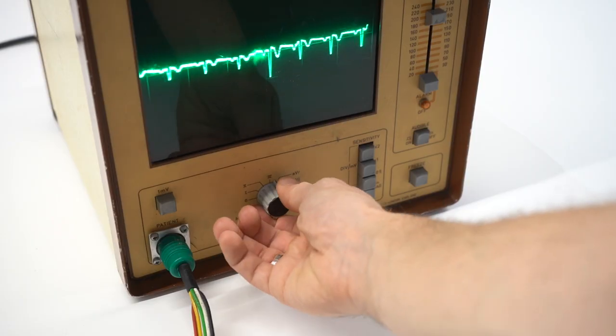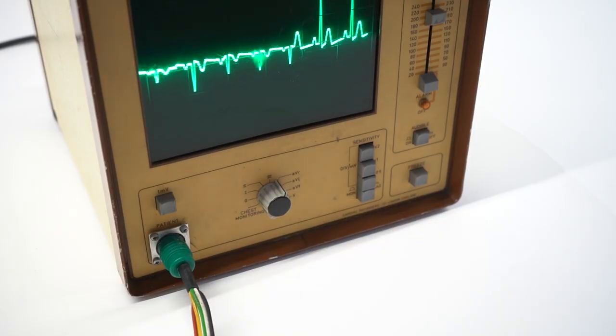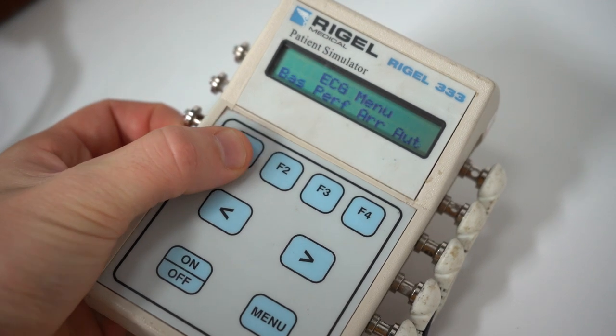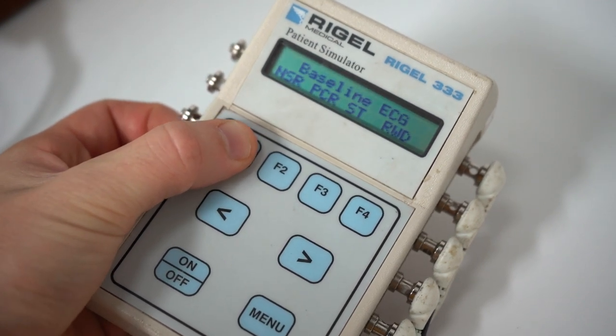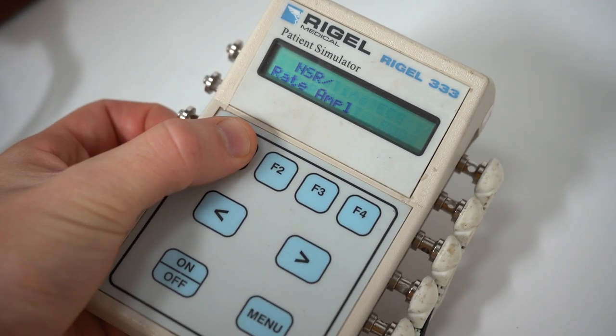Make sure this dial is set to this position for the classic heart rate pattern on the display. To change the qualities of the ECG, press the F1 button until you reach this menu.